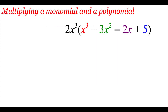Now as we're looking at the first part of multiplying some polynomials together, the first thing we're going to look at is multiplying a monomial and a polynomial together. So here we have 2x cubed times x cubed plus 3x squared minus 2x plus 5. Now what we're going to do here, when you're multiplying a monomial and a polynomial together, is use the distributive property.